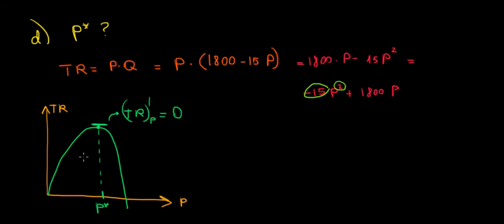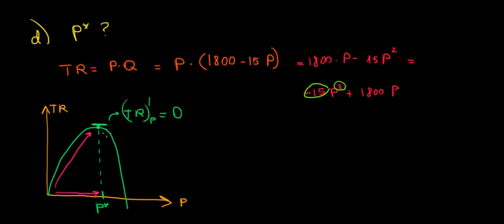The intuition for why we have such a graph: there is a certain range over which we can increase the price to a point where people are still buying, so total revenues still go up. But there is a threshold beyond which, if we increase the price, quantity demanded drops so much that the trade-off of higher price and less quantity works against us and revenues start to decrease. We want to stop at this peak — this sweet spot.